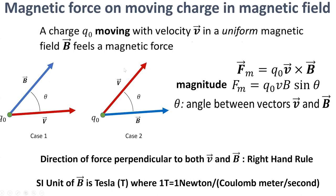Let's first think about the magnetic force on a moving charged particle in an external magnetic field. If we have a charge Q₀ moving with a velocity V in a uniform magnetic field B, the magnetic force is Q₀ times V cross B. The magnitude is Q₀ times the speed times the magnetic field magnitude times the sine of the angle between the velocity vector and the magnetic field vector.